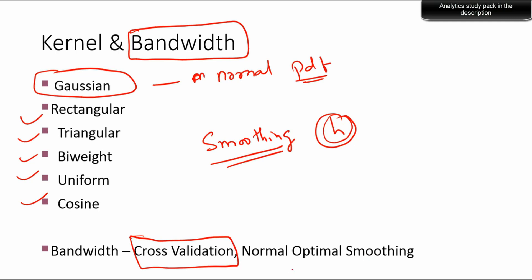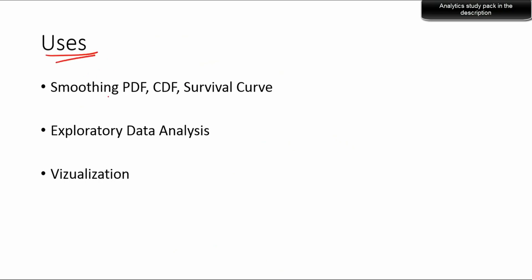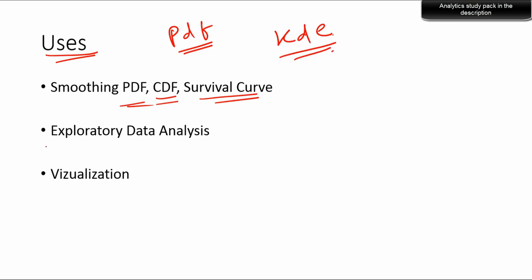KDE is basically used to calculate the PDF for data that doesn't have a proper theoretical PDF. In most real-world scenarios, data won't fit a theoretical distribution, and that's when you use kernel density estimation to get a smooth PDF, CDF, or survival curve. It is also very useful in exploratory data analysis — understanding how your data is distributed across different quantiles and percentiles — making it a good way to visualize data.